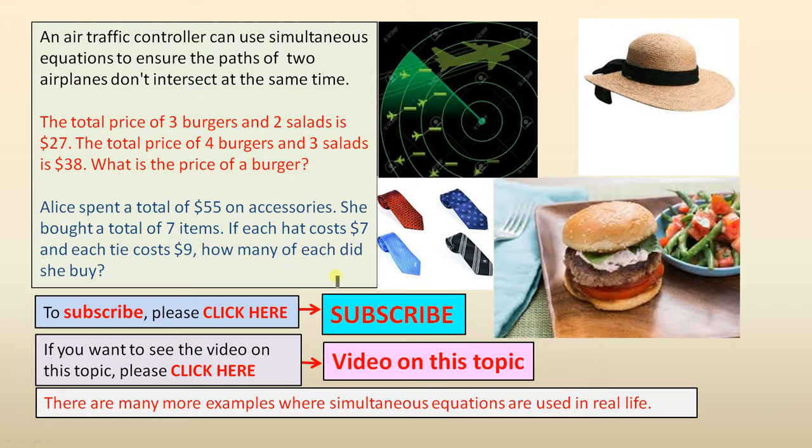And here's another everyday problem that's easily solved using simultaneous equations. Alice spent a total of $55 on accessories. She bought a total of seven items. If each hat costs $7 and each tie costs $9, how many of each did she buy?